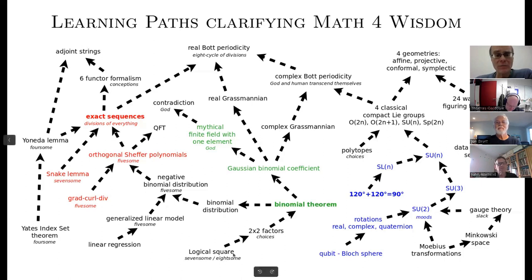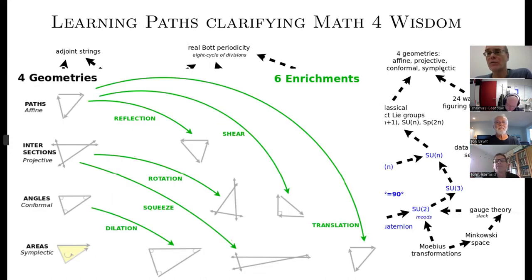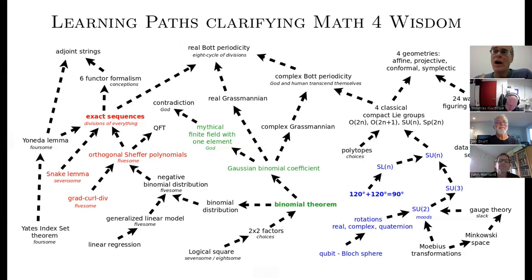So there are these pathways where certain things might be rather simple, like the binomial theorem. But there might be a version that's more sophisticated, like the Gaussian binomial coefficient, where you have a counting subspaces of a vector space when you have a finite field. There's certain peaks that we'd like to climb, like Bott periodicity has an eight cycle periodicity, which I suspect matches what I've observed for these divisions of everything. That's a huge challenge. Similarly, I suspect there's four geometries: affine, projective, conformal, symplectic. So I'm trying to show that if we can climb these learning paths, we can get there.